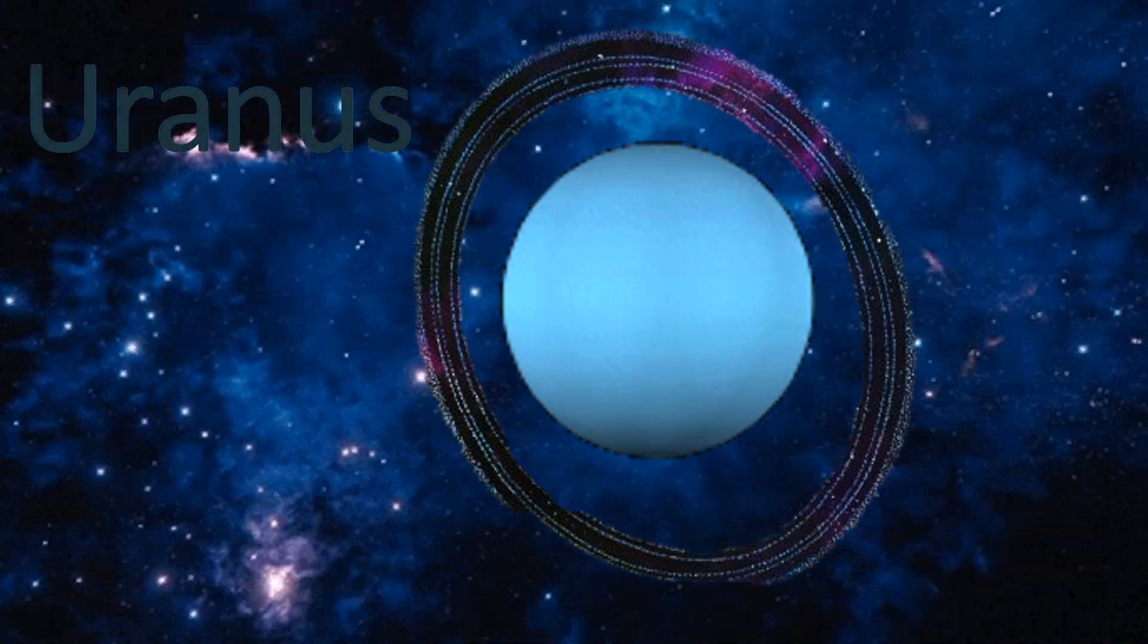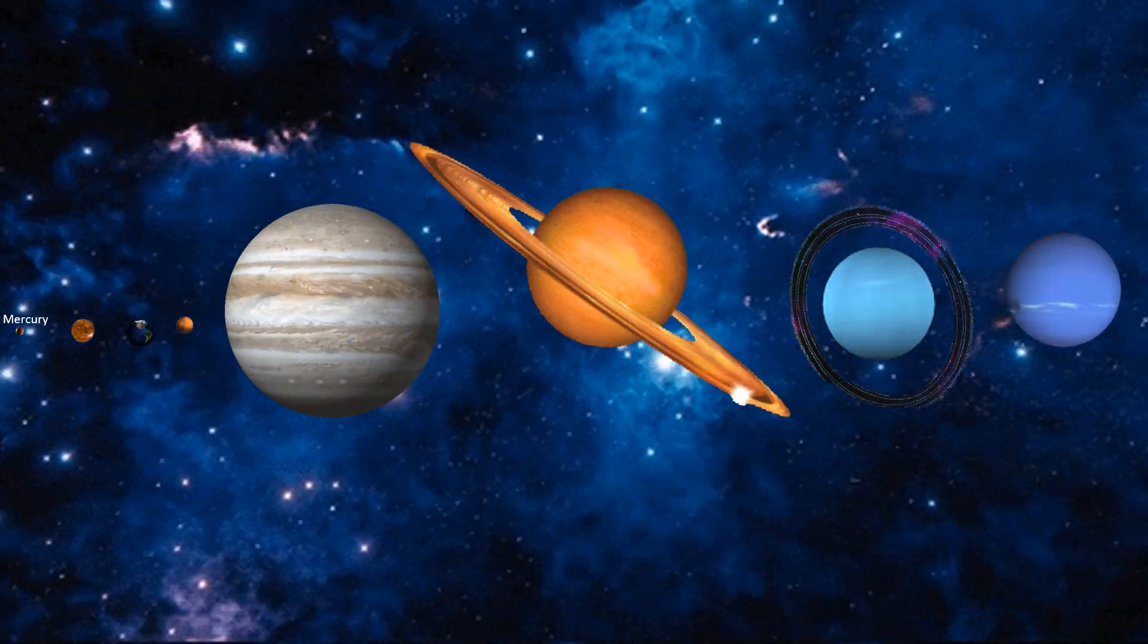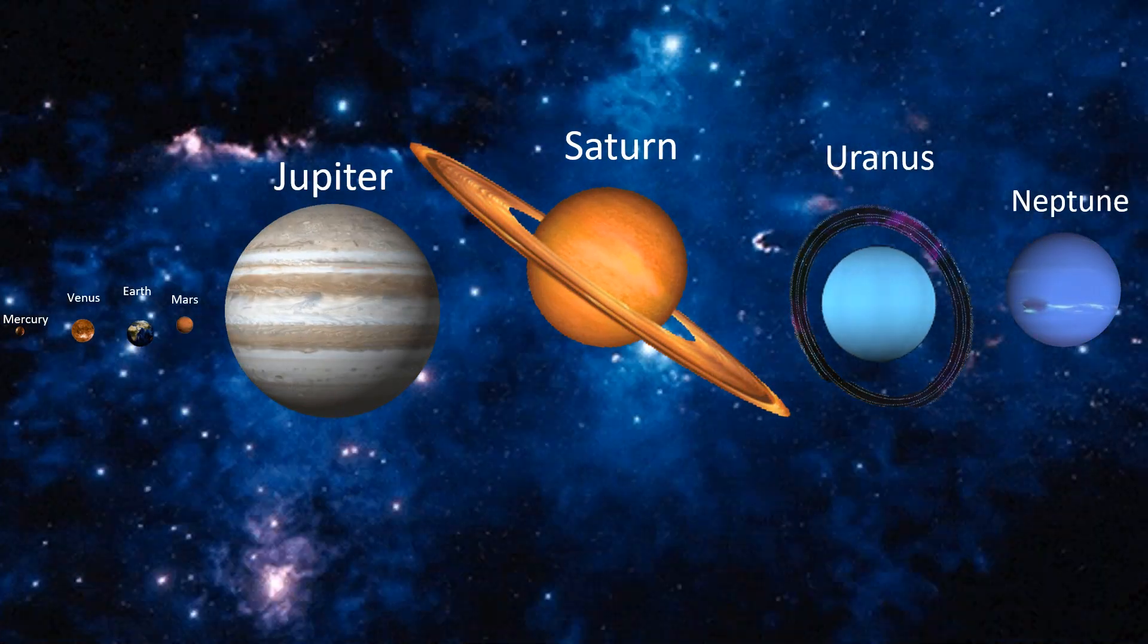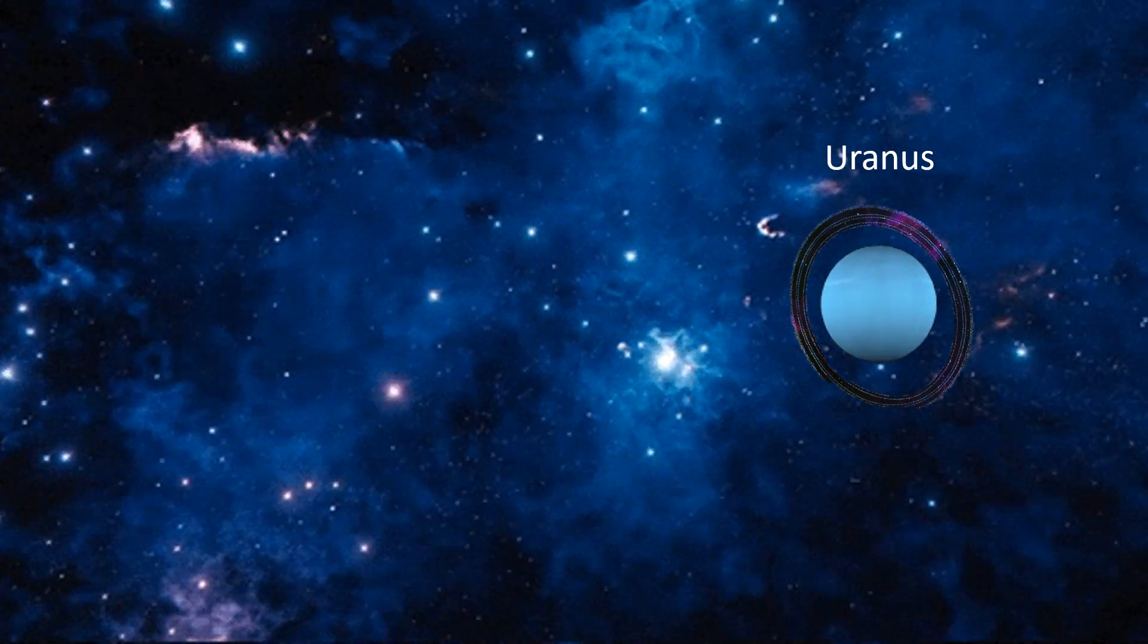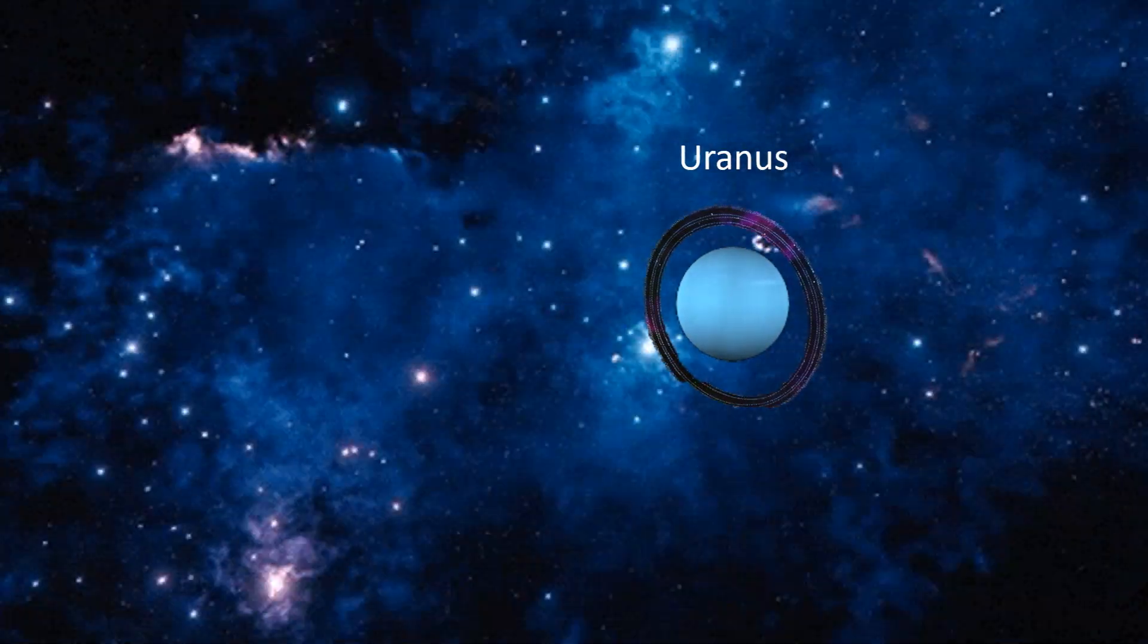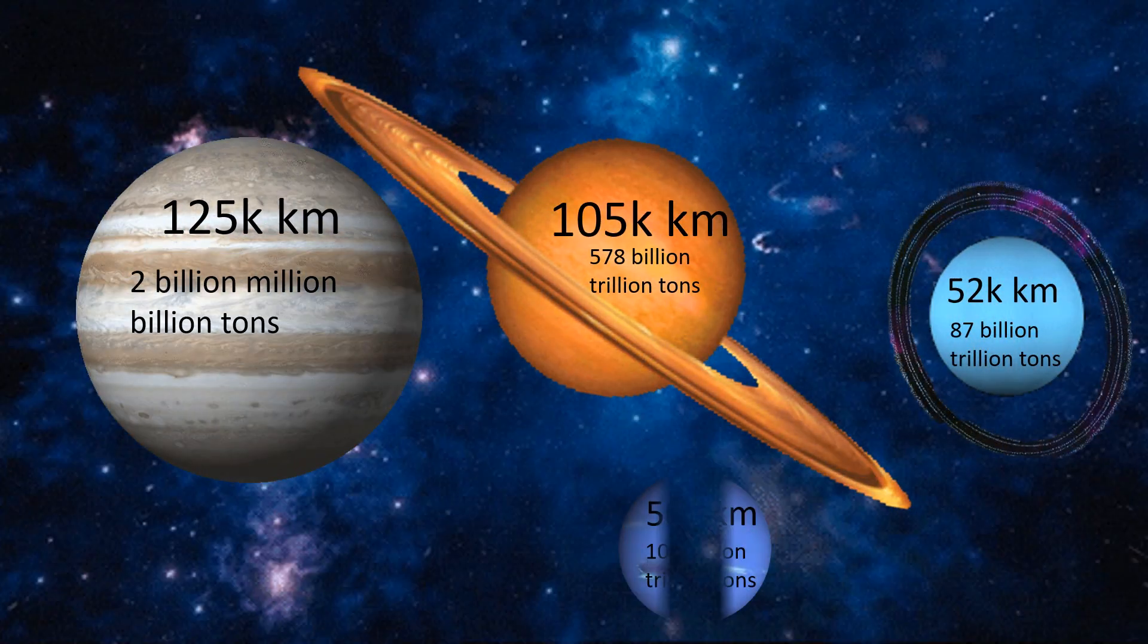Our topic today is Uranus. Uranus is one of the eight planets of the solar system. It is the third biggest and fourth heaviest planet in the solar system.